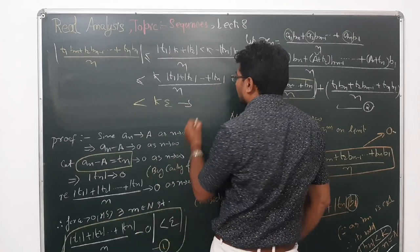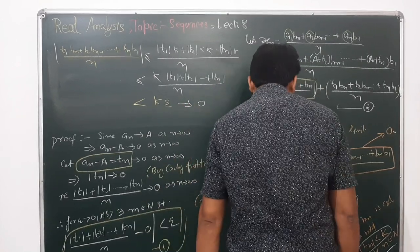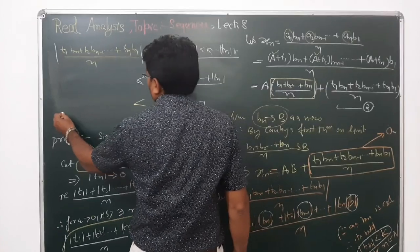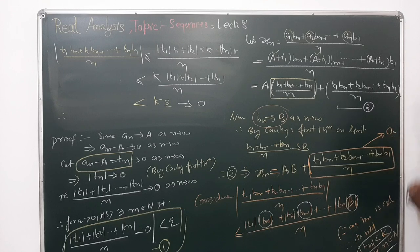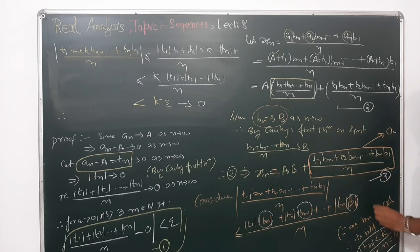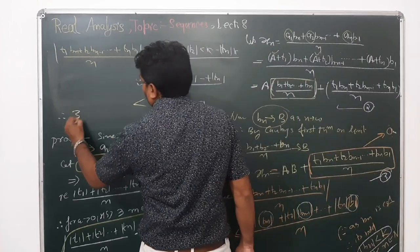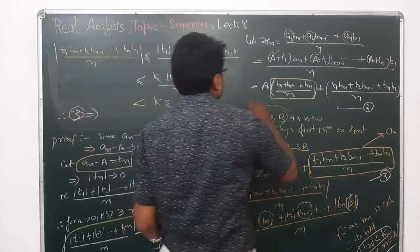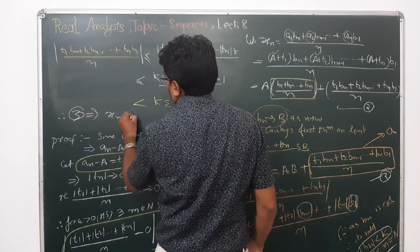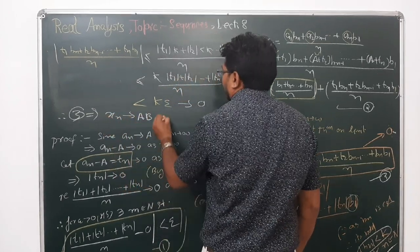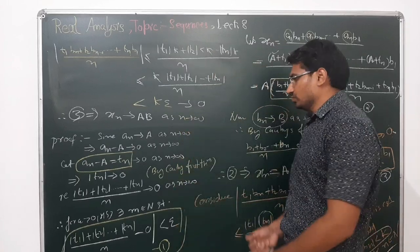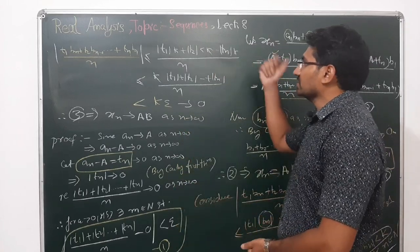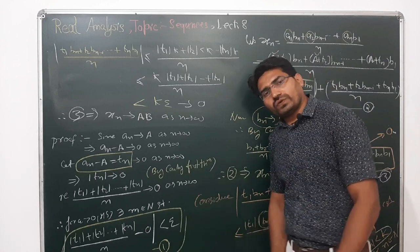Epsilon may be very small, tending toward zero. So therefore, as n approaches infinity, this completes the proof. From equation three, x_n converges to a·b, which is the proof of Cauchy's theorem. Thank you very much.